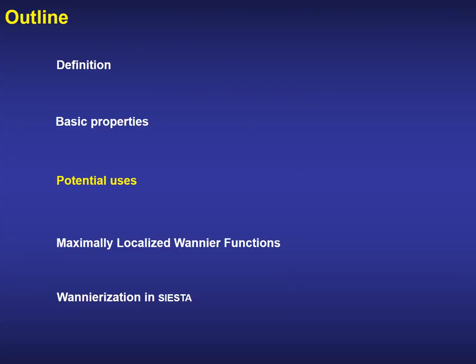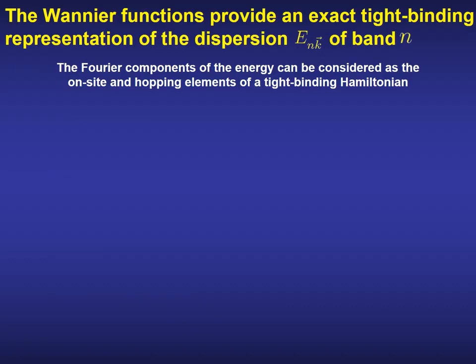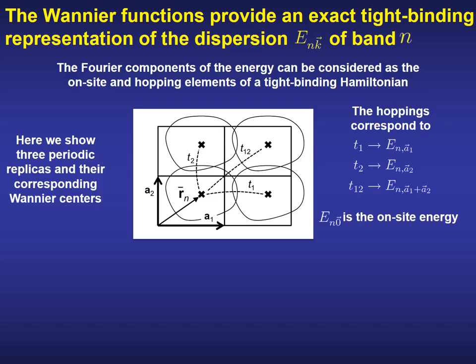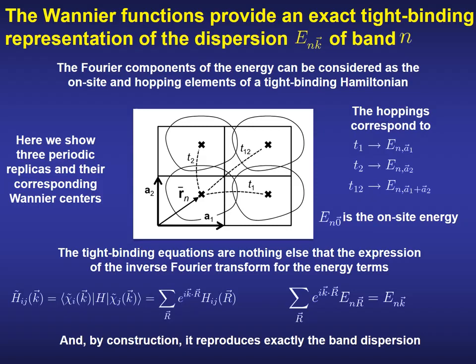All these properties make the Wannier functions very appealing for different uses. Among all of them, I will emphasize here only two. The first one is the construction of tight-binding models. The last properties discussed before tell us that the Fourier components of the energy can be considered as the on-site and hopping elements of a tight-binding Hamiltonian. In this sketch here, we show a Wannier function at the home unit cell and three periodic replicas. The Fourier components with the lattice vector equal to zero would correspond to the on-site energy of the tight-binding approach, while the Fourier components of the other lattice vectors are the corresponding hoppings. Then, we can match the tight-binding equations with the inverse Fourier transform of these energy terms.